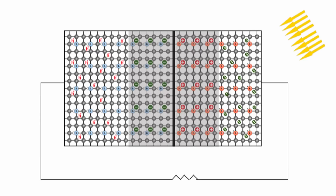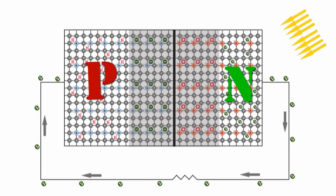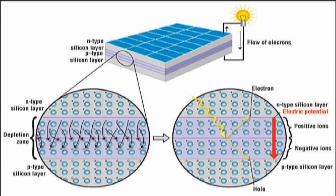If we connect an external load to the n-side and p-side, these electrons on the n-side will move through the external circuit and combine with the holes on the p-side, creating an electric current that flows through the external circuit. This is how a solar cell works.